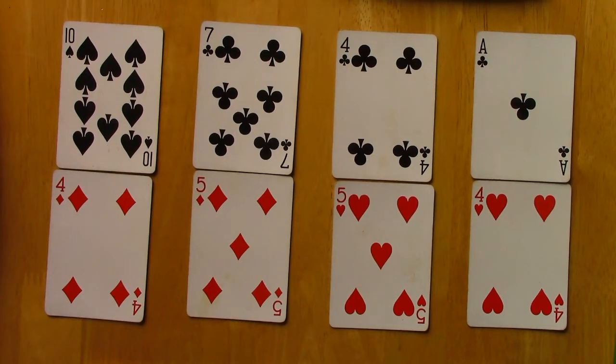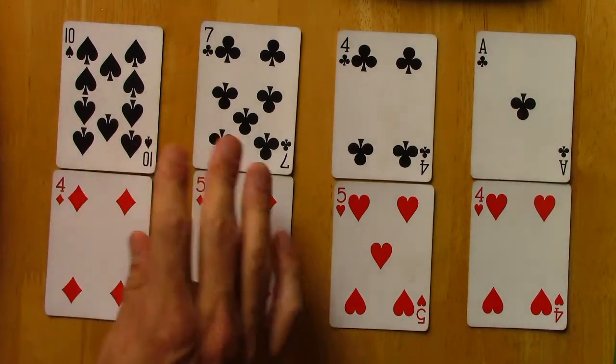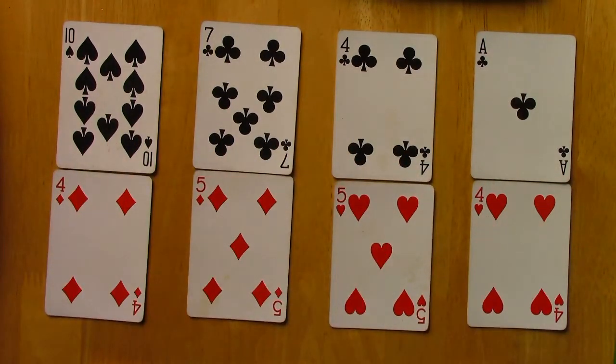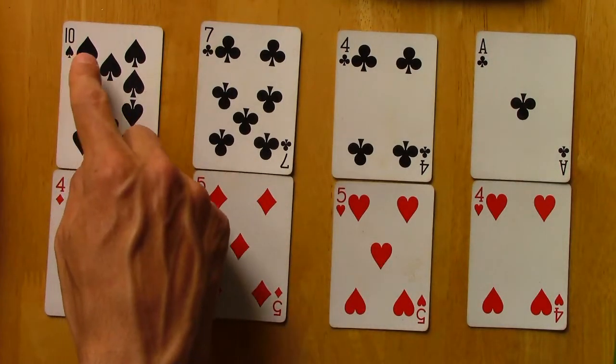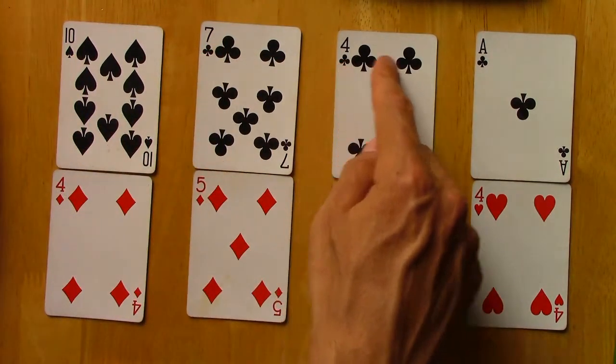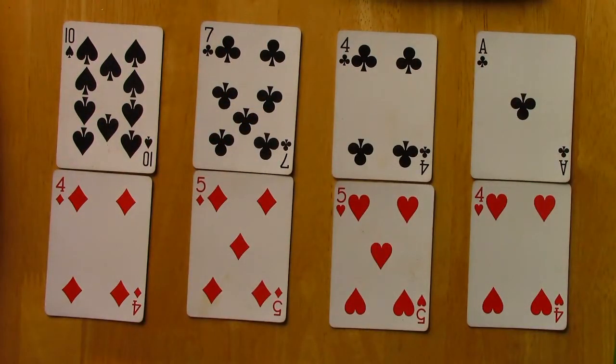Now if we imagine these are four different types of individuals in a population, each with equal probability, and think about the average treatment effect, we can see the average untreated outcome is 4 and a half, and the average treated outcome will be 10, 10 plus 7, 17, 21, 22 divided by 4 is 5 and a half.